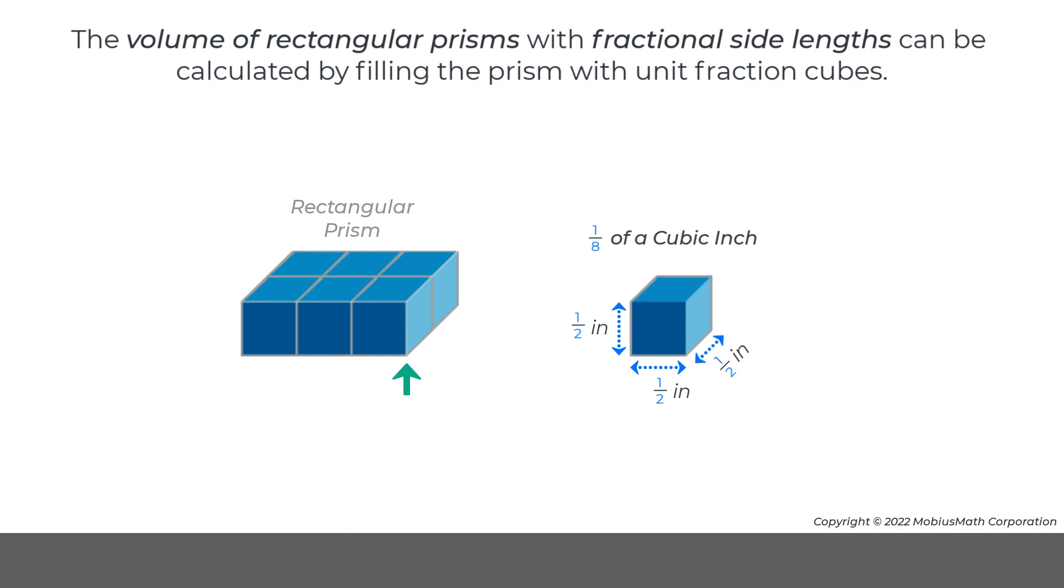The length of the prism is three halves of an inch, the width of the prism is two halves of an inch, and the height of the prism is one half of an inch.